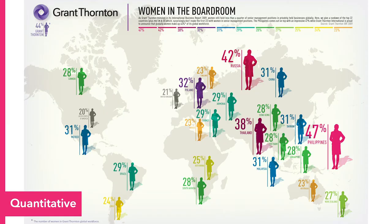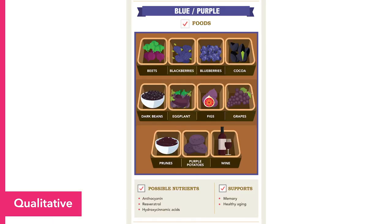You might also have data that is quantitative that you're trying to represent. Quantitative data includes numbers and statistics, often representing things like proportions, levels, frequencies, and averages. For example, this infographic from Grant Thornton uses statistical data paired with a corresponding color and scale to convey the percentage of women in the boardroom globally. But you don't have to have numbers to build an infographic. You can also have qualitative data, which is more descriptive — like informative lists grouped into subcategories to convey the nutrition of blue and purple colored foods.